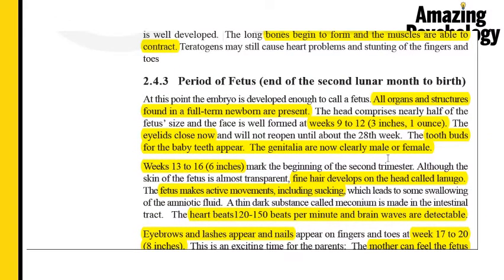The period of the fetus runs from the end of the second lunar month until birth. During this time all the organs and structures found in a full-term newborn are present, and the face and fetal size are well formed. During weeks 9 to 12 there is growth to three inches in length and one ounce in weight. The eyelids close and will not open until the 28th week, tooth buds for baby teeth develop, and the genitalia are completely clear as male or female.